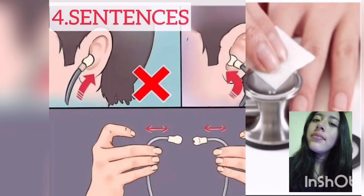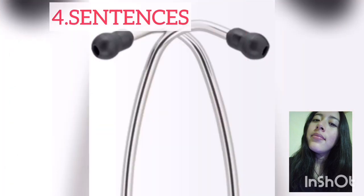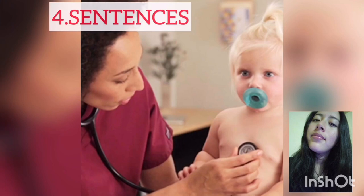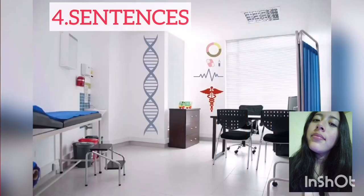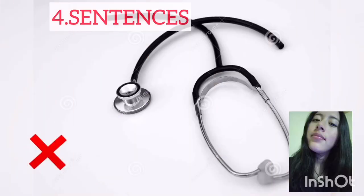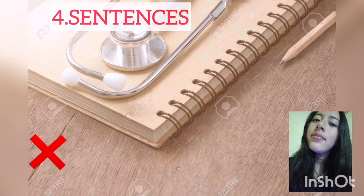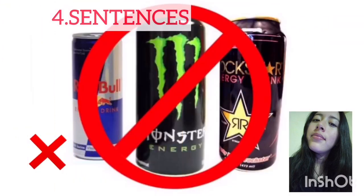You have to check the headset tension. You have to clean your stethoscope. You have to adjust the stethoscope's headphone. You have to put the patient in the correct position. You have to find a quiet place. Do not use a dirty stethoscope. Do not puncture the stethoscope tubes. Do not auscultate in a noisy room. Do not overexpose the stethoscope to the sun. Do not drink energy drinks before you auscultate.